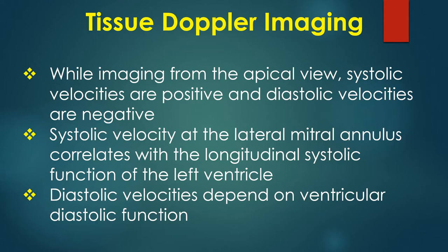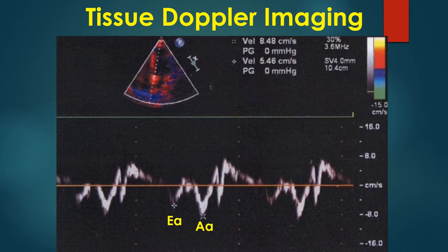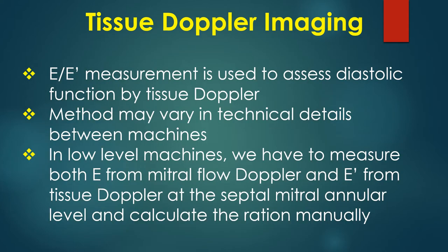Diastolic velocities depend on ventricular diastolic function. TDI assessment of diastolic function is load independent compared to the conventional measurement using mitral inflow velocities, which are highly sensitive to preload. Tissue Doppler imaging at the level of the mitral annulus illustrates EA and AA. EA is also called E prime to differentiate from mitral inflow velocity; A in EA stands for annulus, while EM is used to indicate myocardial. E by E prime measurement is used to assess diastolic function by tissue Doppler.